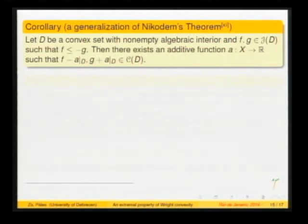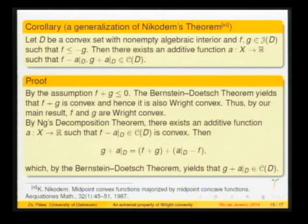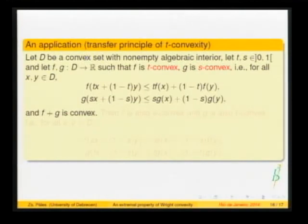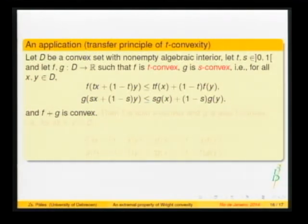There are several consequences. One is a result due to Kazimierz Nikodem from 1987: if a Jensen convex function is majorized by the negative of a Jensen concave function, then there exists an additive function A such that F minus A and G plus A are both convex. Another consequence is a transfer principle for T-convexity: if F is T-convex, G is S-convex, and their sum is convex, then F is also S-convex and G is also T-convex.